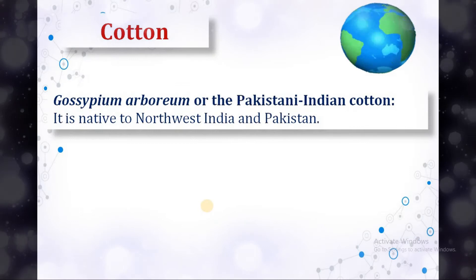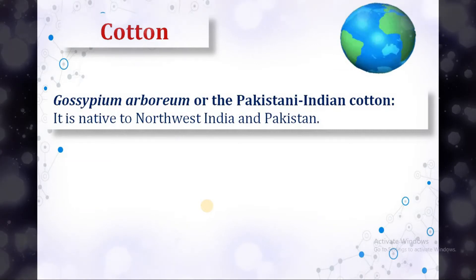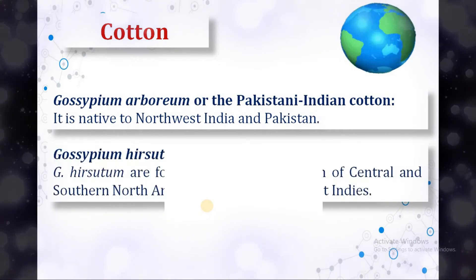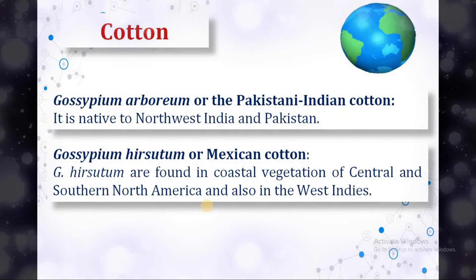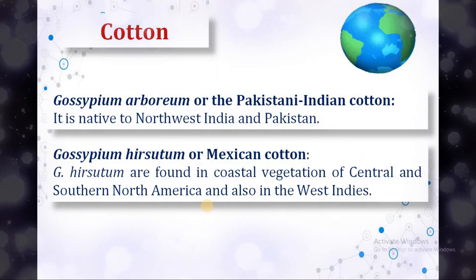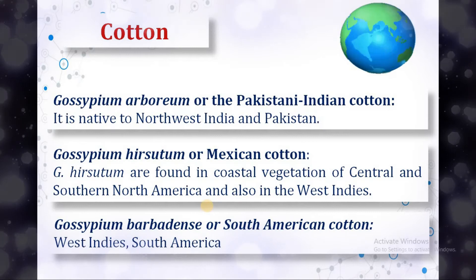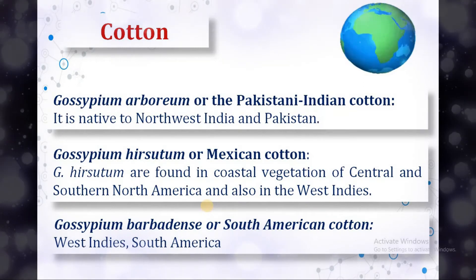Gossypium herbaceae is also called Pakistani Indian cotton. It is native to Northwest India and Pakistan. Gossypium hirsutum is also called Mexican cotton, and it is found in coastal vegetation of Central and Southern North America. Gossypium barbadense is mainly cultivated in West Indies and South America, particularly in Barbados.